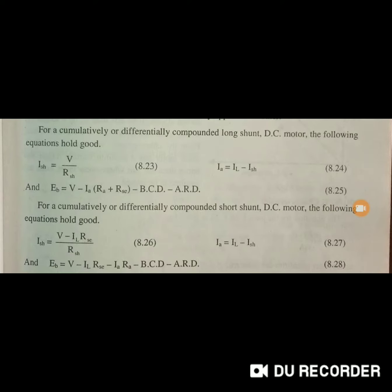If you see the equations: I_SH is equal to V divided by R_SH. I_A is equal to I_L minus I_SH. Back EMF E_B is equal to V minus I_A into R_A plus R_SE. This equation holds good for both cumulative and differential long shunt DC motor.